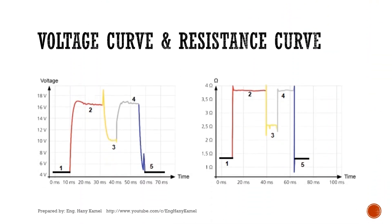For the voltage curve and resistance curve, the sequence is the same as discussed for the current curve. For the voltage curve, it will show the measured voltage drop, and for the resistance curve, it will be calculated from the measured voltage drop and injected current.